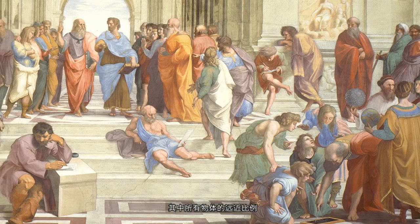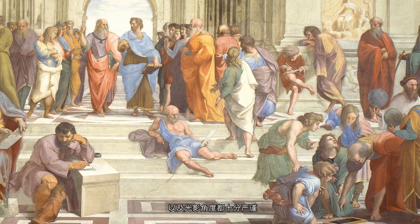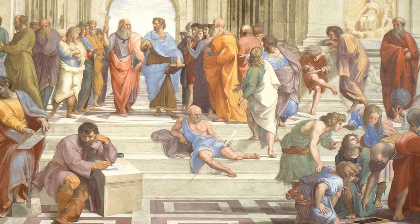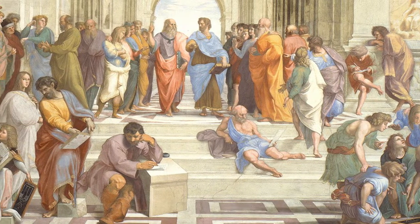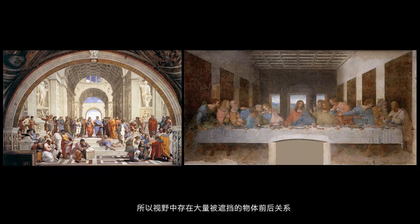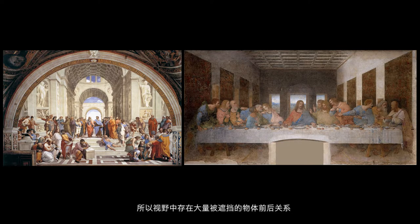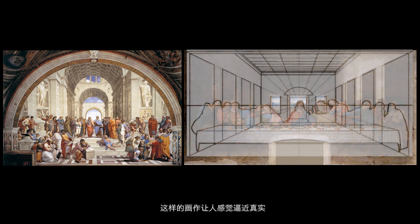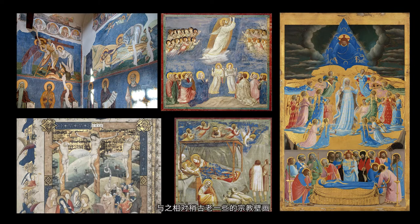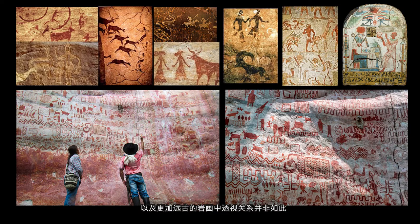西方在文艺复兴时期产生了很多伟大的绘画作品，比如拉斐尔的《雅典学院》。欣赏这幅画，你会感觉自己置身于一个舞台的中央，所有视线最终消失于远方的一点，画面的空间感很强。这样的表现手法被称作焦点透视。所有物体的远近比例以及光影角度都十分严谨，因为观察点为时空中的一个静止固定的点，所以视野中存在大量被遮挡的物体，前后关系画面中需要如实呈现。这样的画作让人感觉逼近真实，就像某一时刻的幻境。